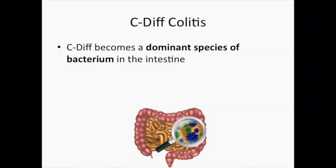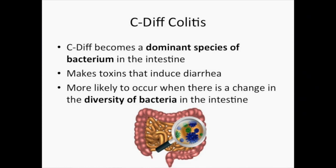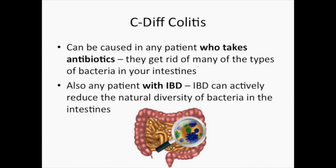Let's start by explaining infections caused by Clostridium difficile, or C. diff for short. C. diff colitis occurs when C. diff becomes a dominant species of bacterium in the intestine and makes toxins that induce diarrhea. This is more likely to occur when there's a disruption of the diversity of bacteria in your intestine. This can be caused in any patient by taking antibiotics, because they get rid of many of the bacteria in your intestines, or in patients with inflammatory bowel disease, because a patient's IBD can actively reduce the natural diversity of bacteria in the intestines. When there are few other bacteria to compete with, C. diff can thrive and produce watery diarrhea, abdominal pain, and fever. This is why C. diff infections can feel a lot like a flare.